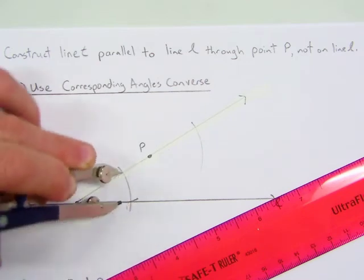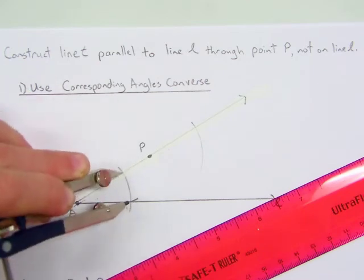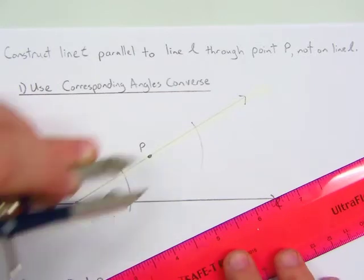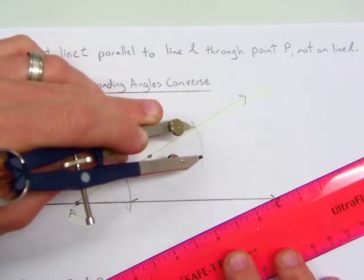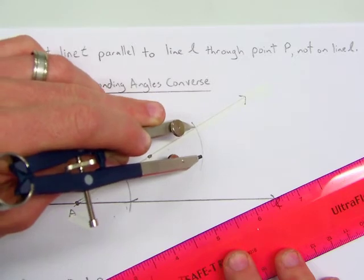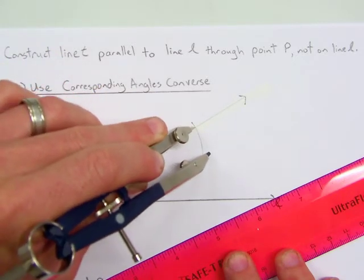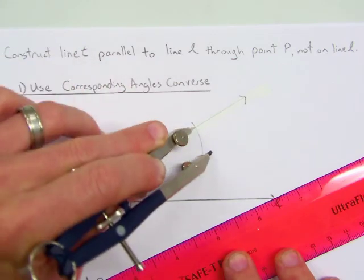I like to draw a little arc just to make sure that I'm going right through there. And then you're going to move your compass point up to your second intersection and you're going to intersect the arc that you made.